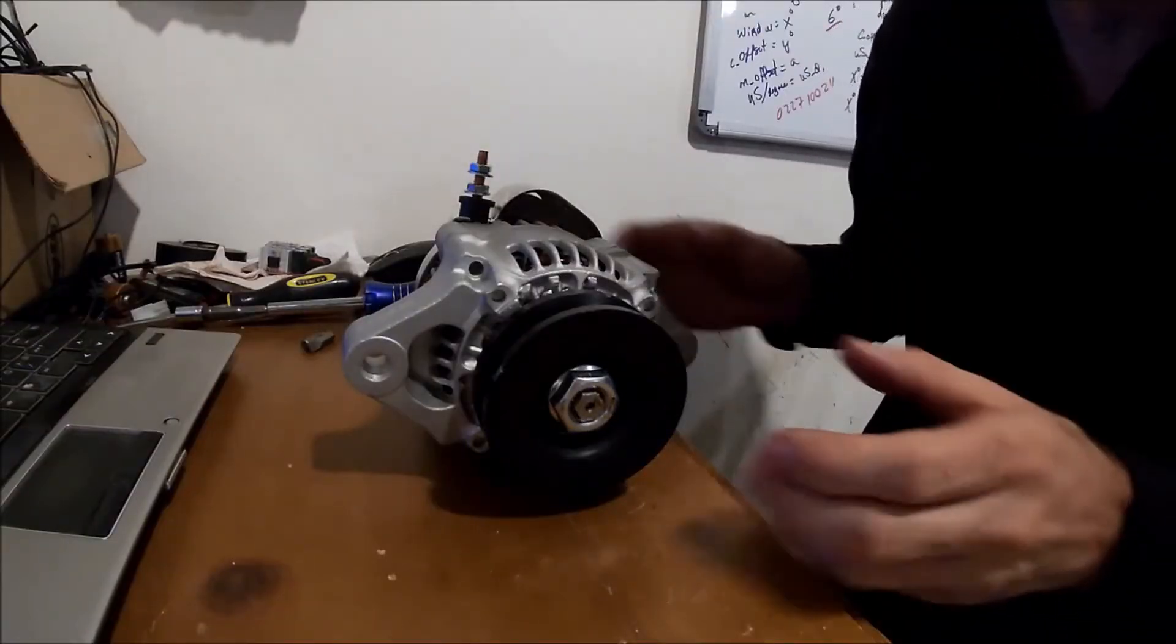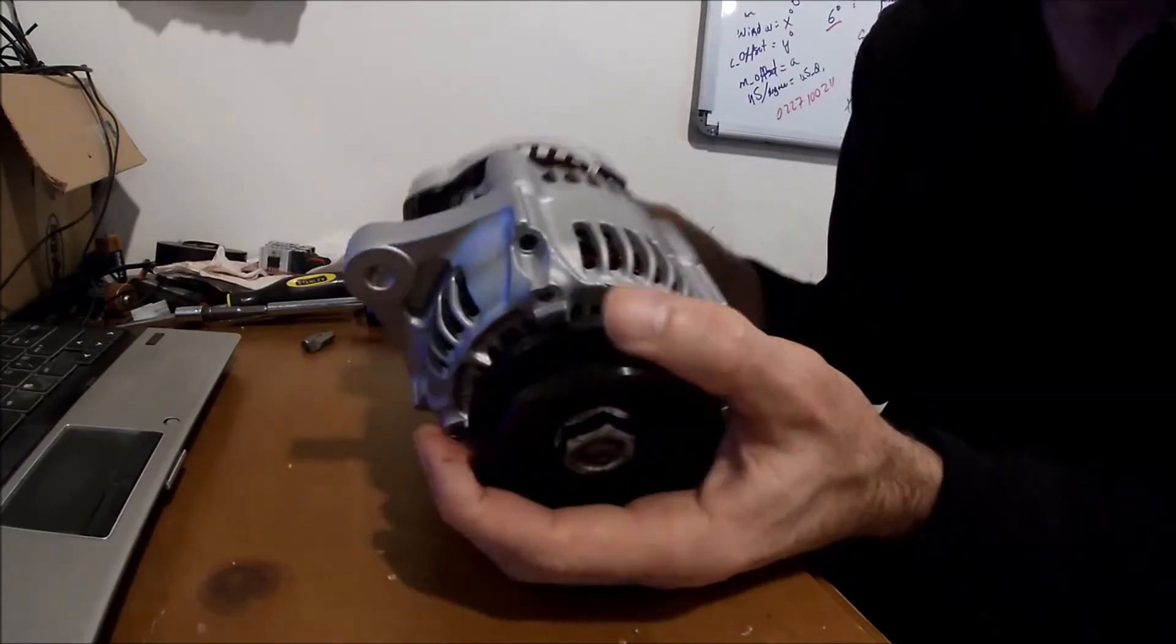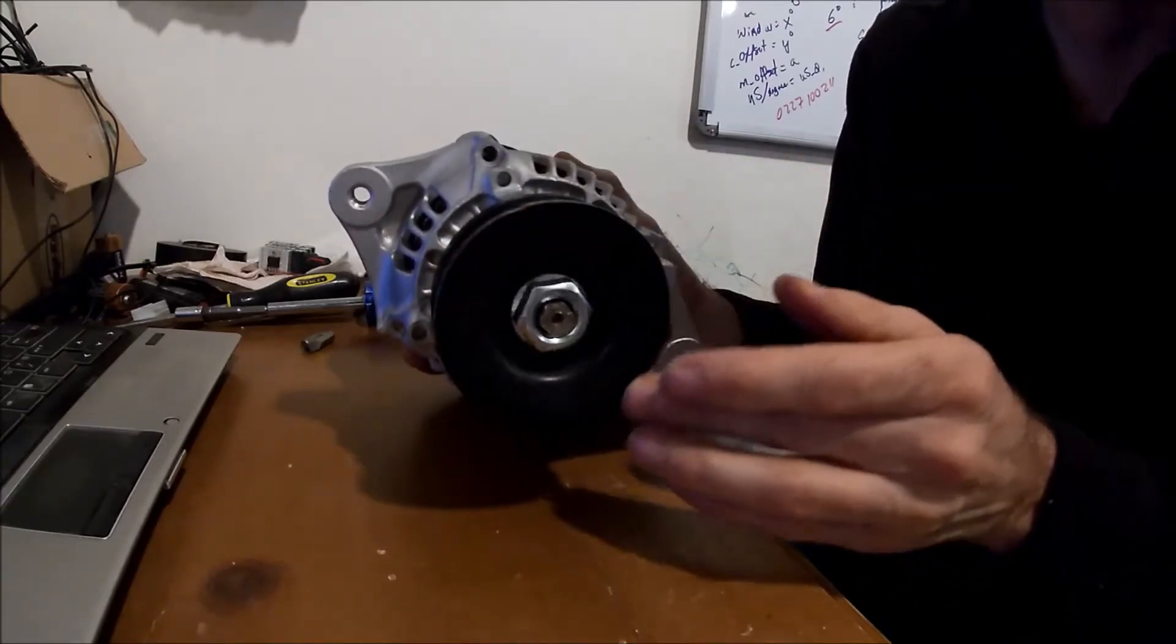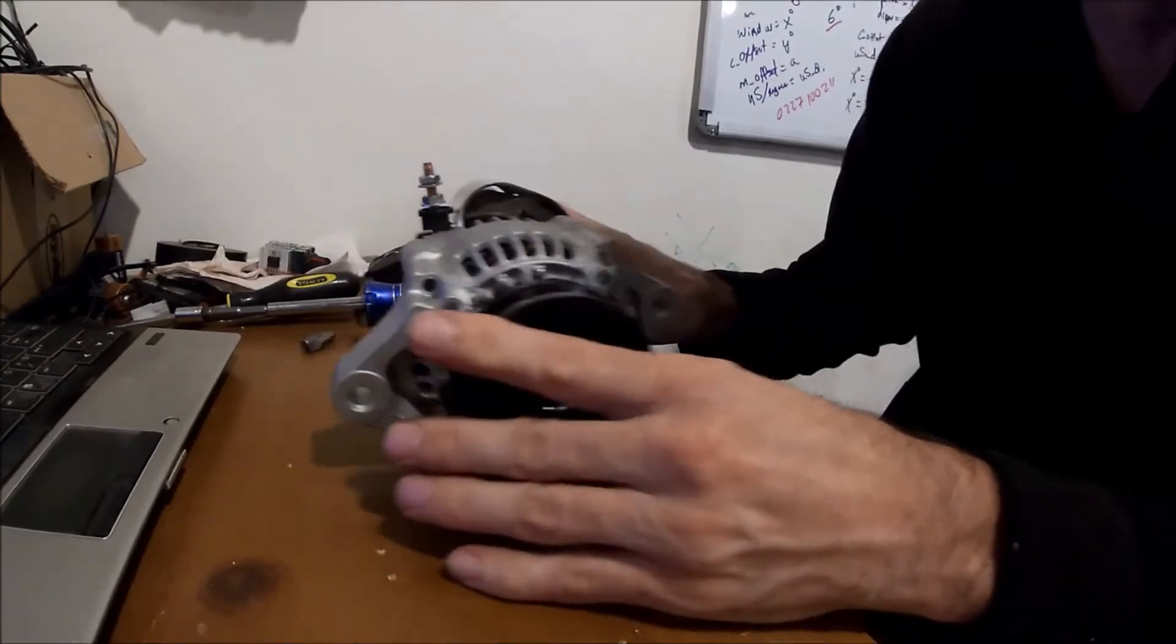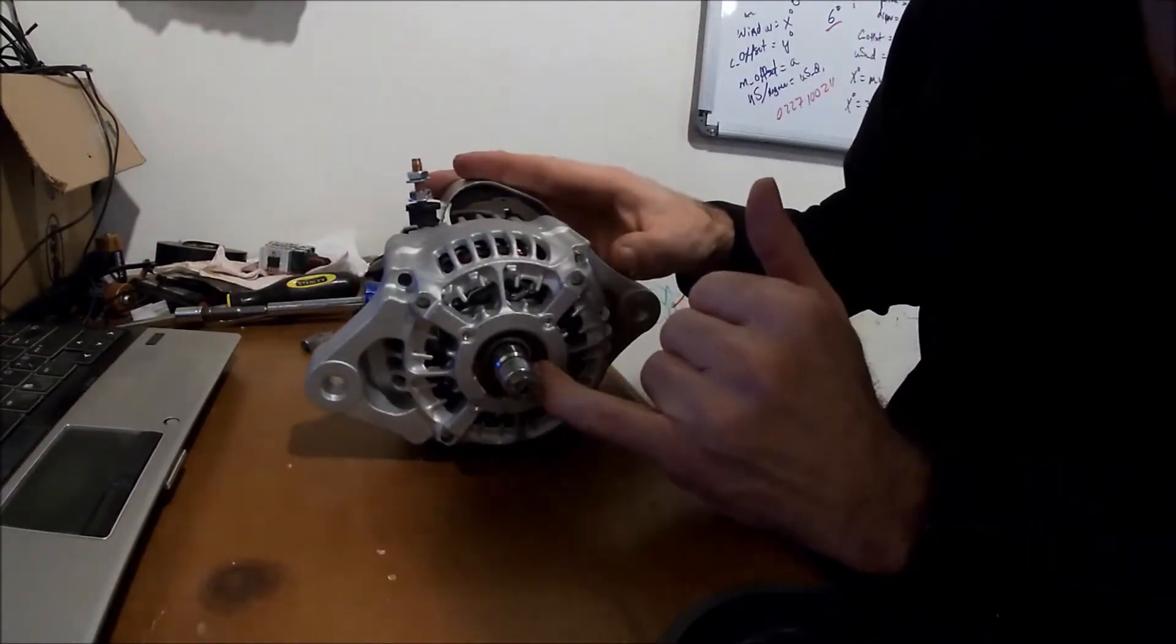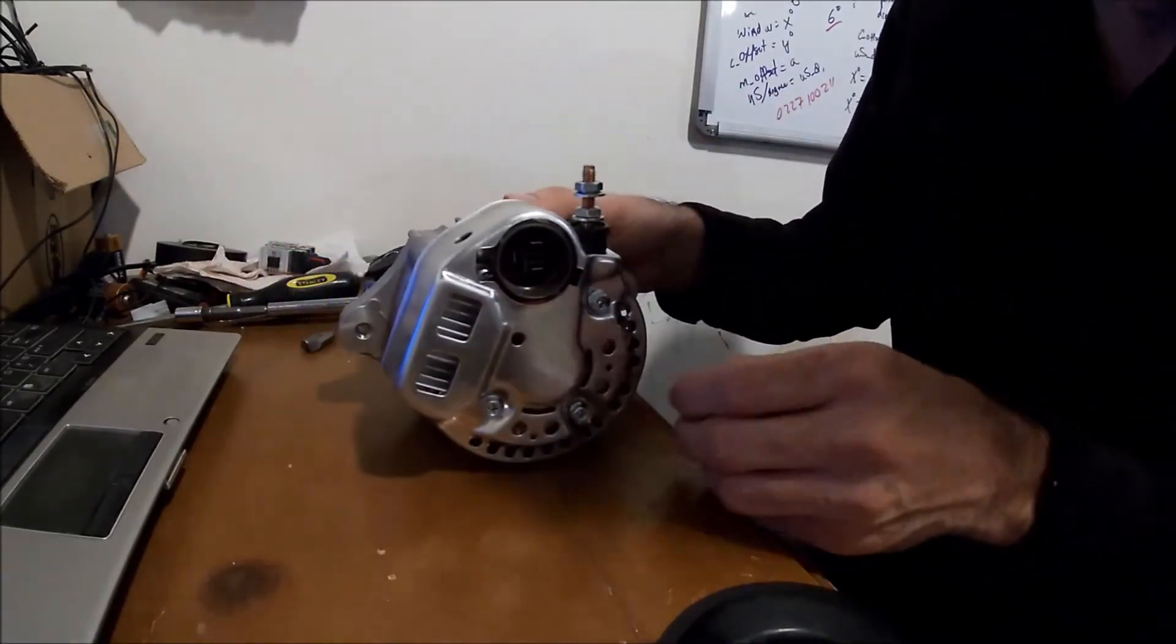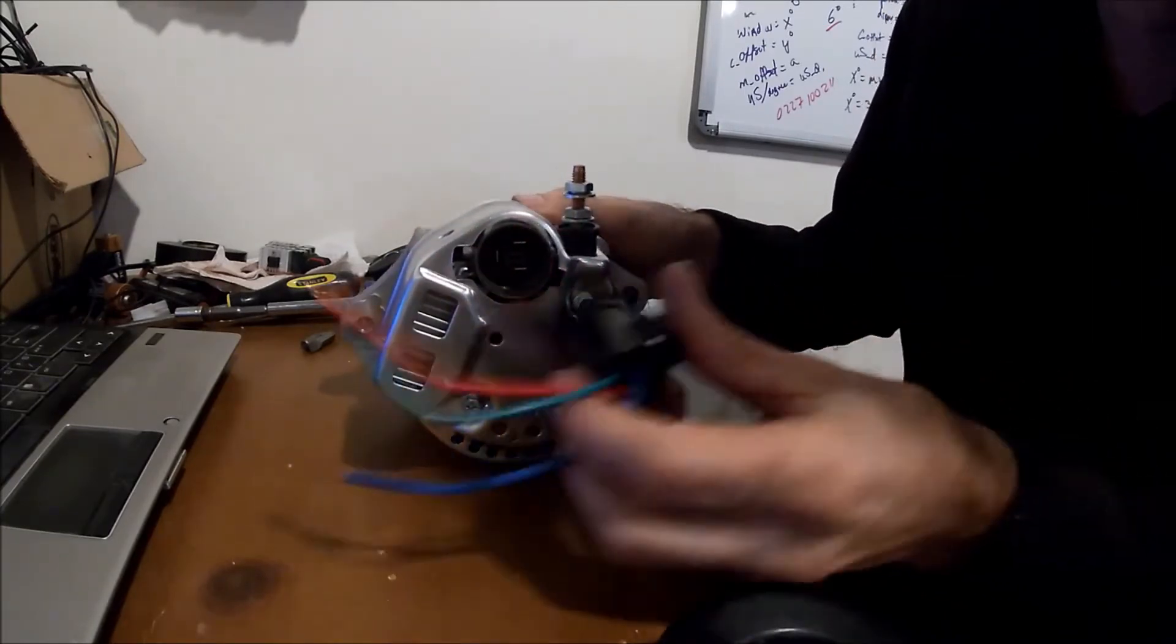This is how you get the alternator out of the box. It's a cute little thing, weighs about 10 pounds, maybe a little bit more. I've already opened it up, so we'll go through that real quick. To start, you'll want to pull off the front pulley. I've already got this loosened up so that all comes apart. There's a sealed bearing on the back.